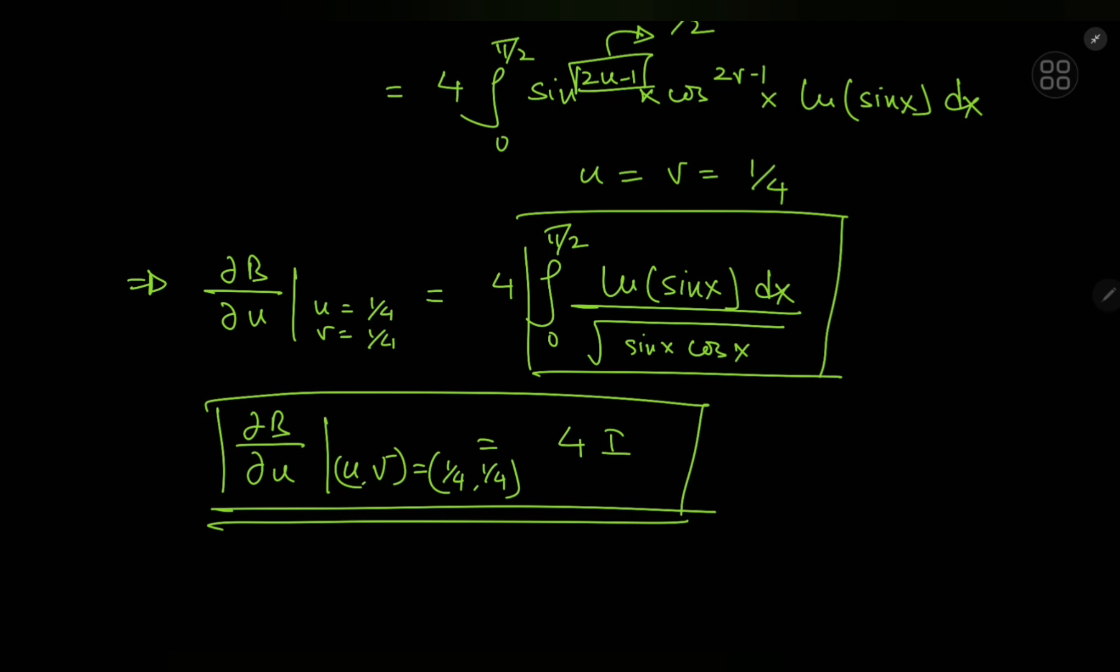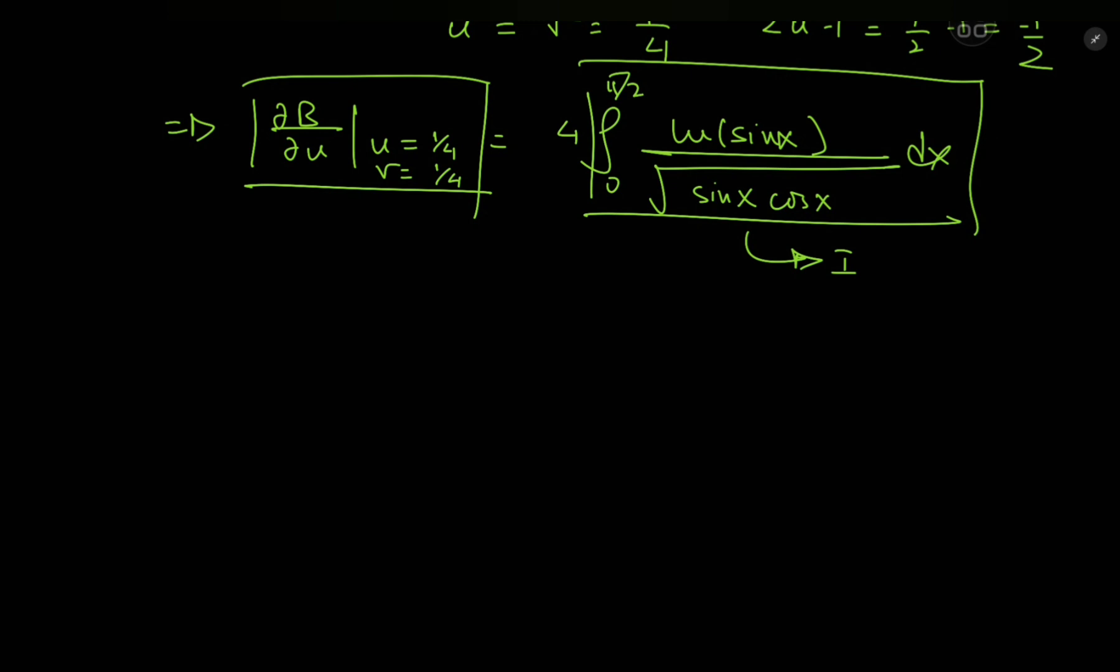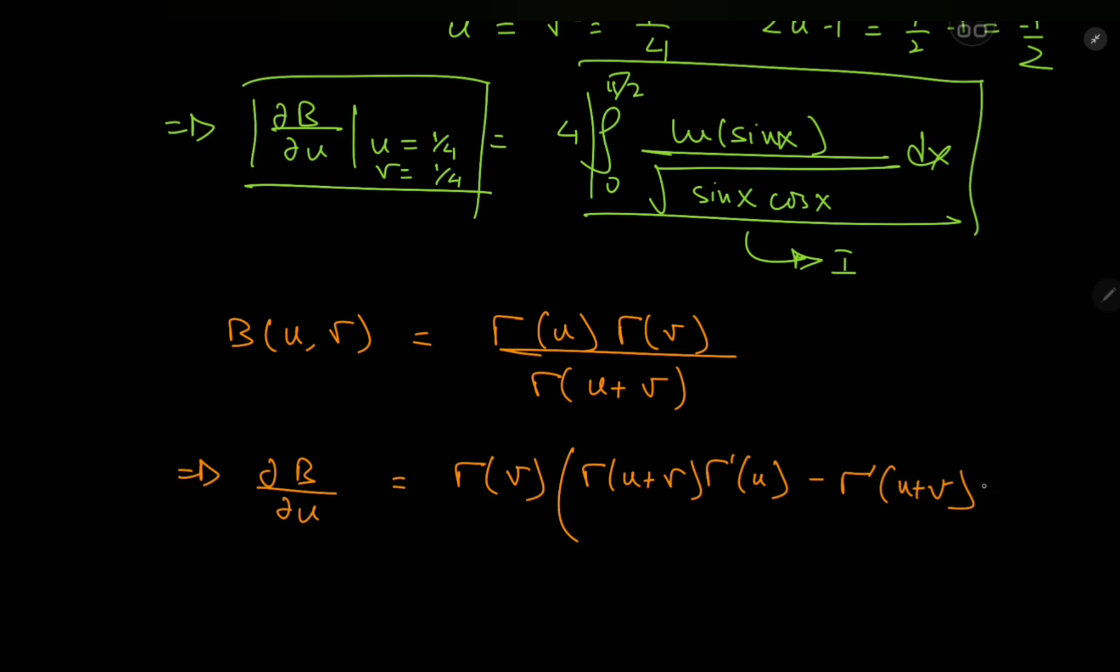Now the question is how exactly do we evaluate this derivative? That's actually a pretty easy question to answer because we can invoke my favorite special function, the gamma function. So beta u v equals gamma u times gamma v divided by gamma u plus v. So differentiating this partially with respect to u gives us a gamma v term outside and inside we have this gamma u plus v term times gamma prime u minus gamma prime u plus v times gamma u divided by the square of the gamma function evaluated at u plus v.